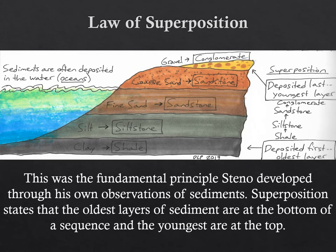There are six relative dating principles: superposition, original horizontality, lateral continuity, igneous intrusions, cross-cutting relationships, and unconformities. The first three are considered Steno's principles or laws. The latter three were developed by Hutton and Lyell later on, in the 1800s.